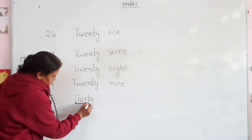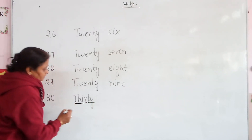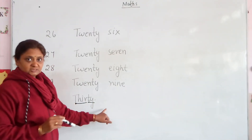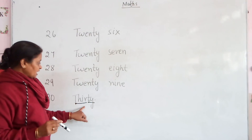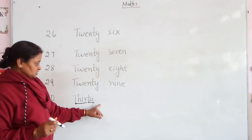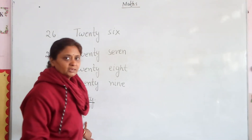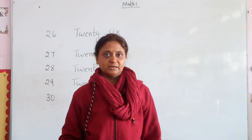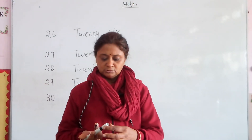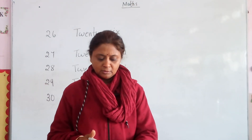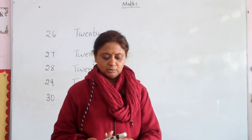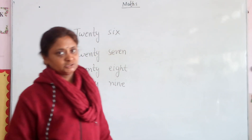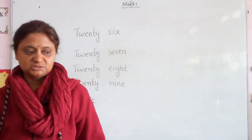So this is 30. Thirty is thirty. Now you should learn and write the number names from 26 to 30.